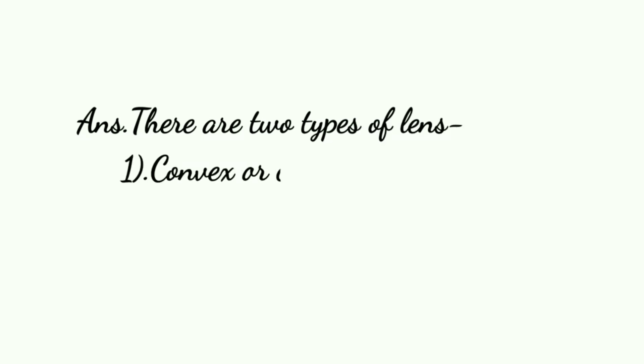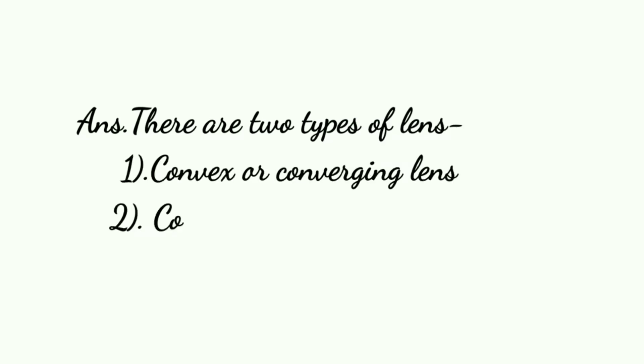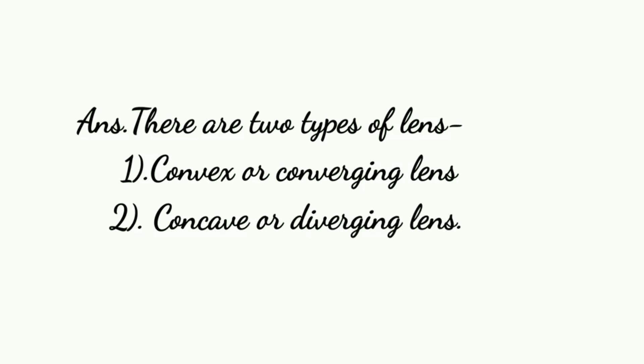There are two types of lens. Dho tarah ke lens hain humare paas: ek convex or converging lens, aur dhusara hai concave or diverging lens. Convex lens ko hum converging lens bhi bolte hain, aur concave lens ko hum diverging lens bhi bolte hain.